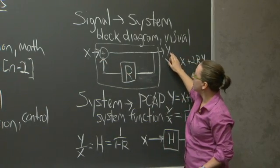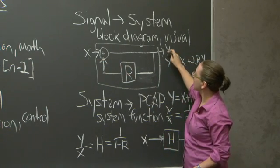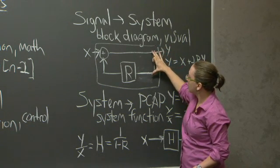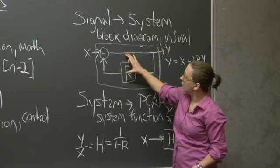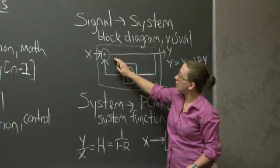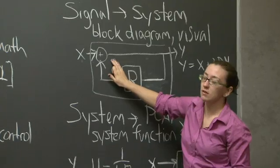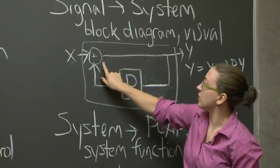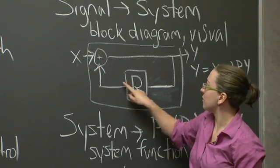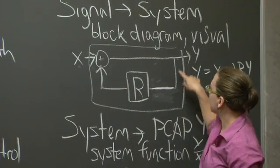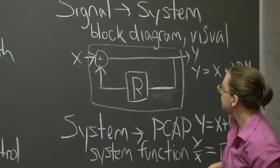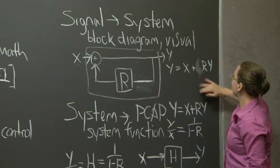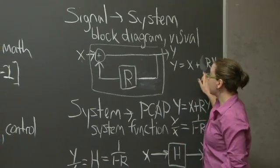In this case, in order to get y, and in the general sense, I can backtrace from the signal that I'm interested in through my diagram and figure out what values I'm actually interested in. So in this particular case, y is the linear combination of x and whatever this represents, which is ry.